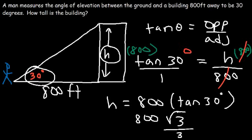If you want the decimal value, make sure your calculator is in degree mode. 800 root 3 over 3 is about 461.88, so that's how tall the building is.